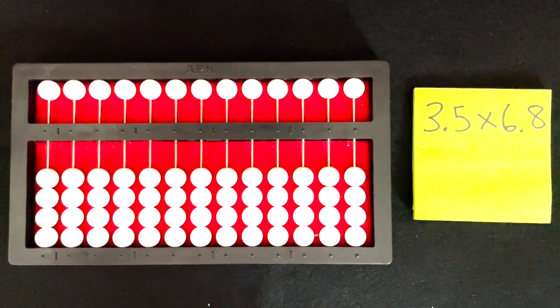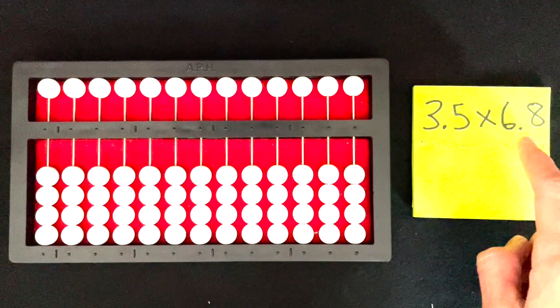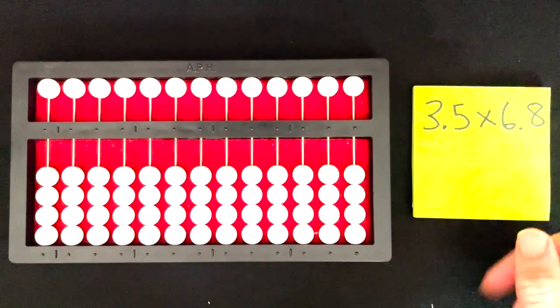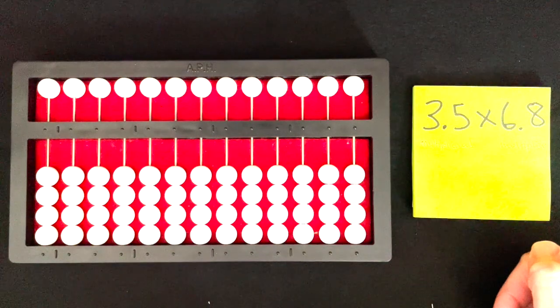Okay, we're going to be doing a multiplication problem here with a decimal point, and we're going to be using the counting method. So let's go ahead and get started.